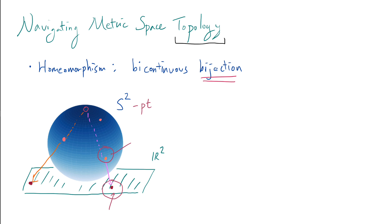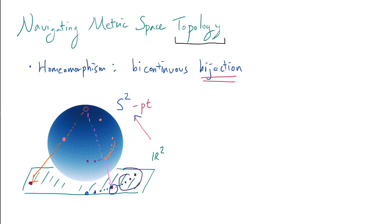Not only that, it is bicontinuous in the sense that it's continuous both ways. For example, it's continuous from S2 minus a point to R2: if I consider approaching an orange point on the sphere with a sequence of purple points, the image points form a sequence that approaches the image. And you can do the similar thing the other way — if I consider approaching any point in R2 with a sequence, the preimage points converge to the right point. So it is continuous both ways, and that's called bicontinuous.